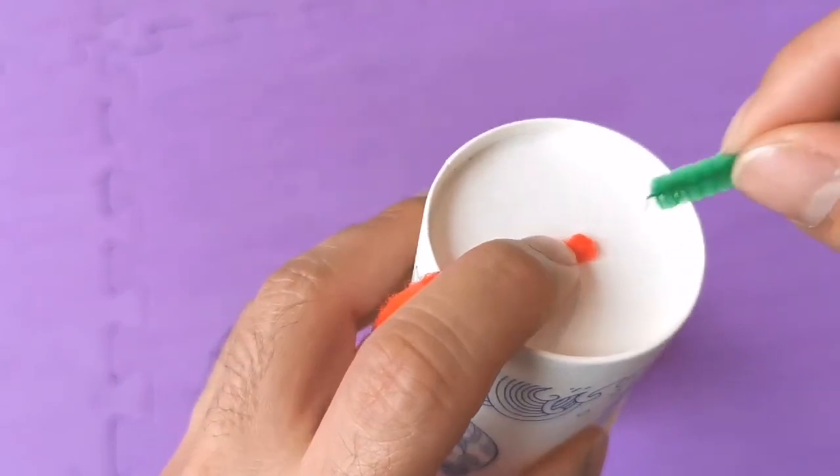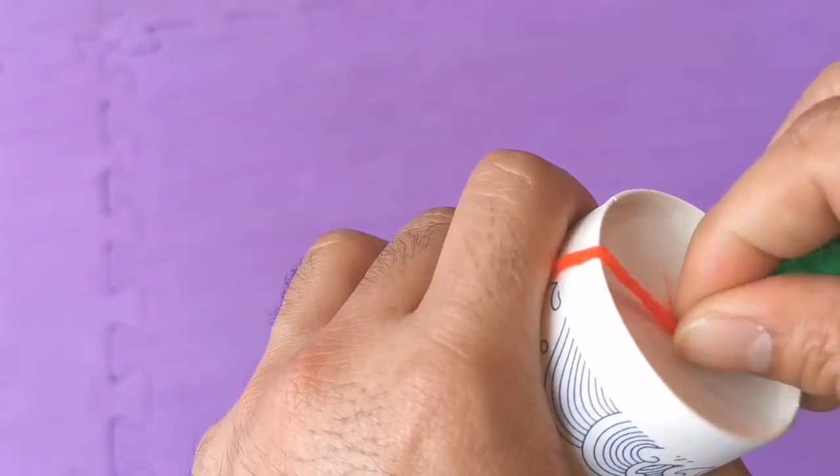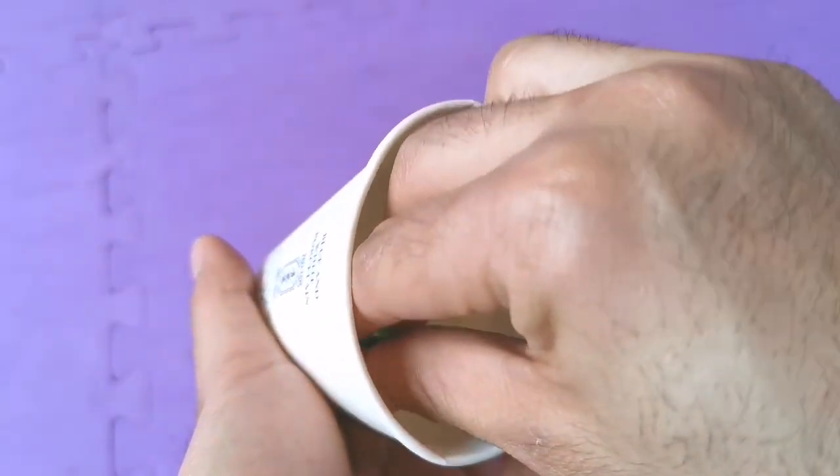Now putting the string alone might be a little bit difficult for me, so I'm going to need the help of a pipe cleaner to help me put the string through. And also do this with the other cup.